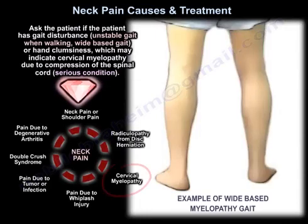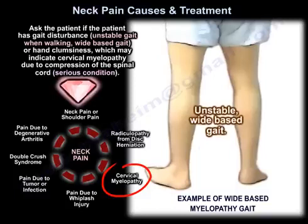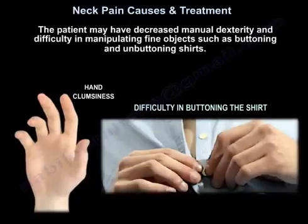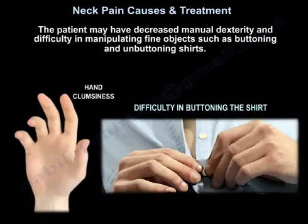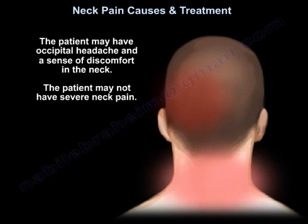Ask the patient if they have gait disturbance, unstable gait when walking, wide-based gait, or hand clumsiness. These may indicate cervical myelopathy due to compression of the spinal cord, which is a serious condition. The patient may have decreased manual dexterity and difficulty manipulating fine objects, such as buttoning and unbuttoning shirts. The patient may also have occipital headache and a sense of discomfort in the neck, but may not have severe neck pain.